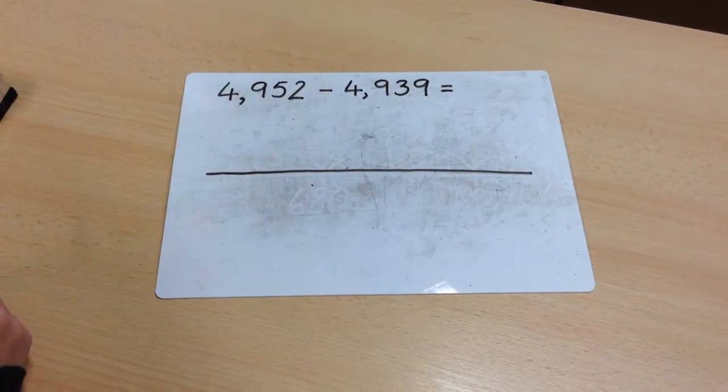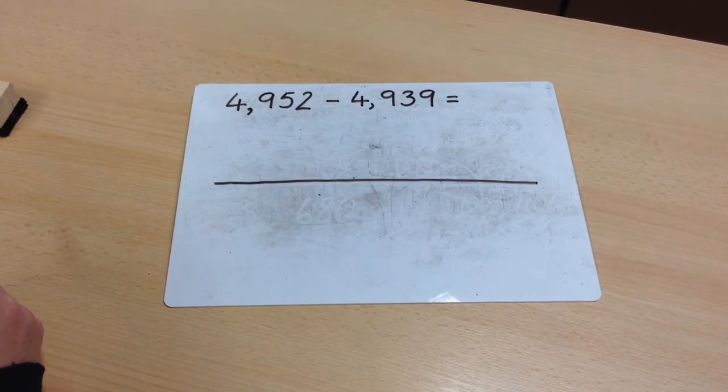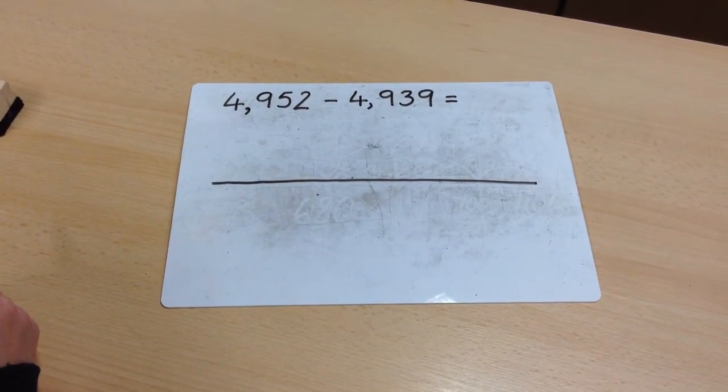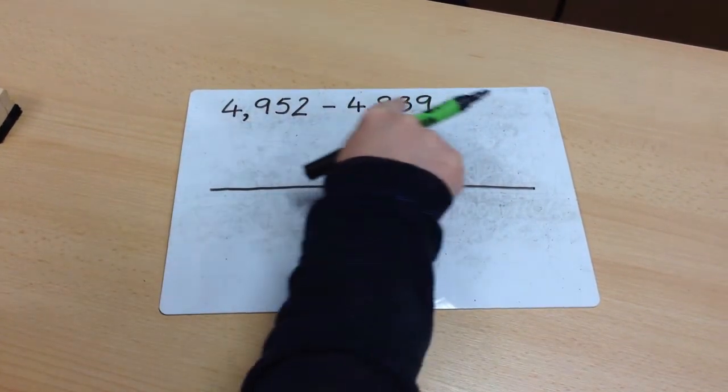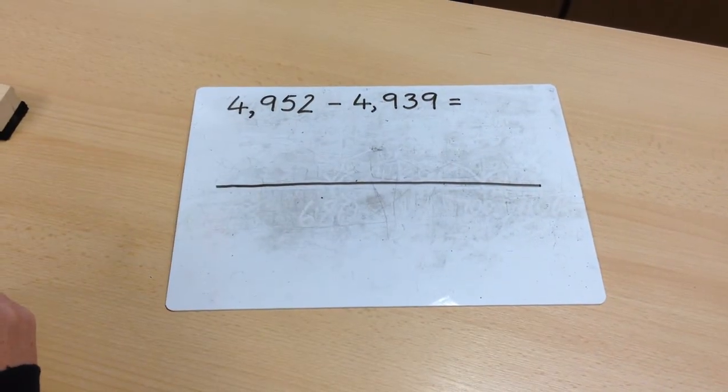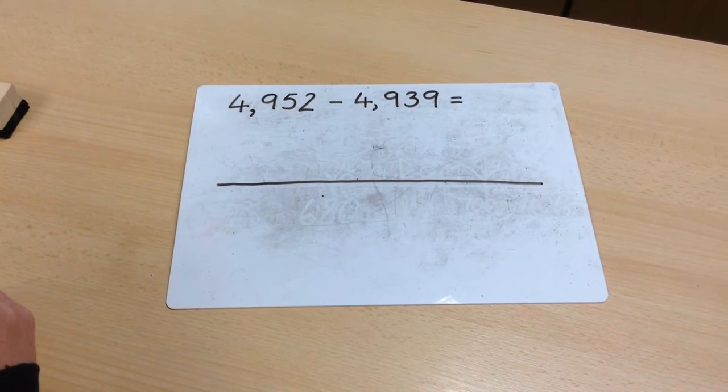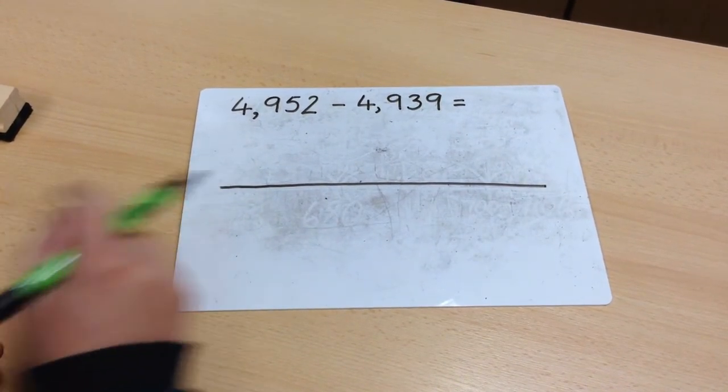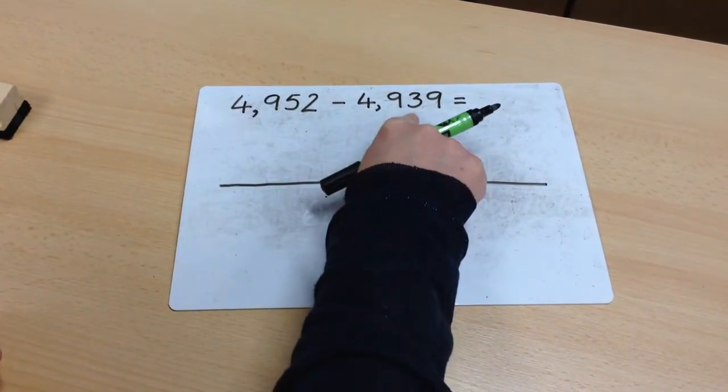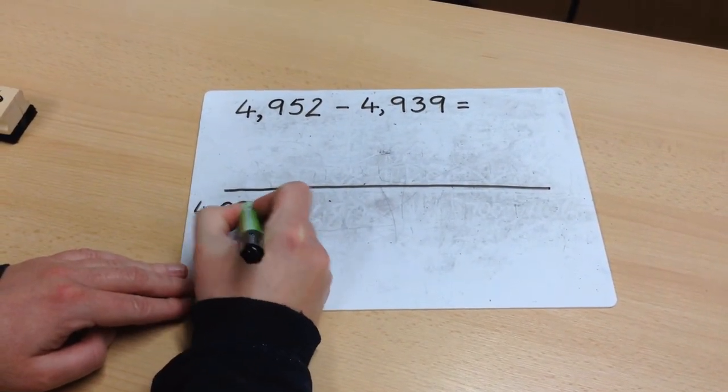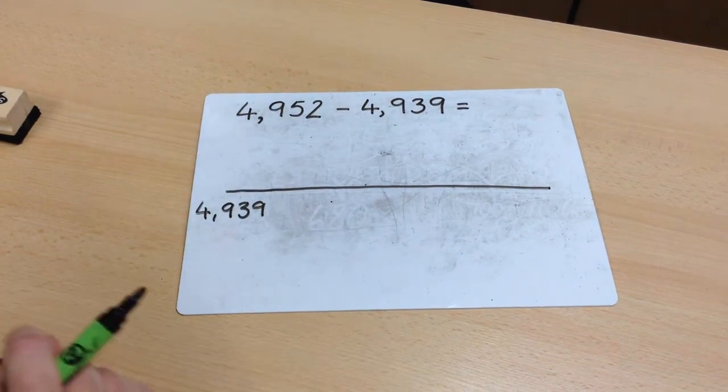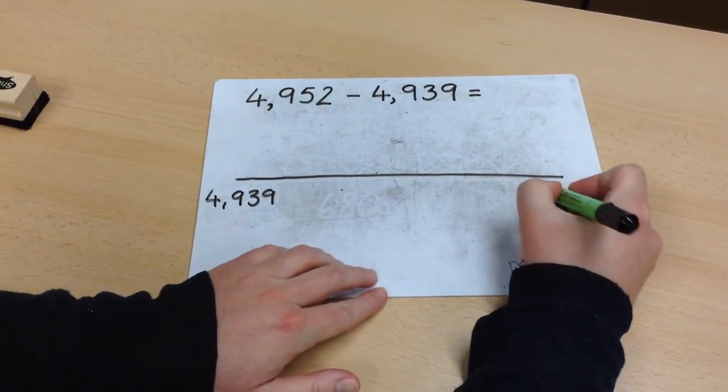Let's look at another one. 4,952 subtract 4,939. Look carefully at the two numbers and you'll see that they are fairly close together. So the most efficient method is to find the difference using a number line. The subtrahend goes on the left hand side. And the greatest number, the minuend, goes on the right hand side.